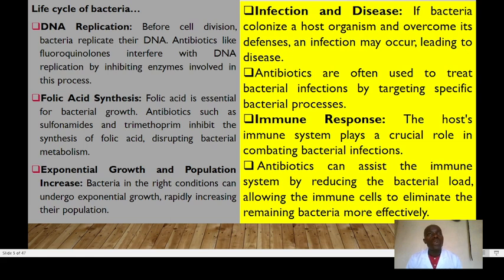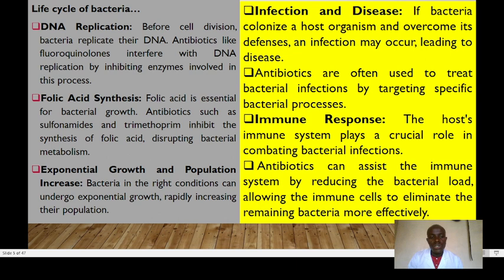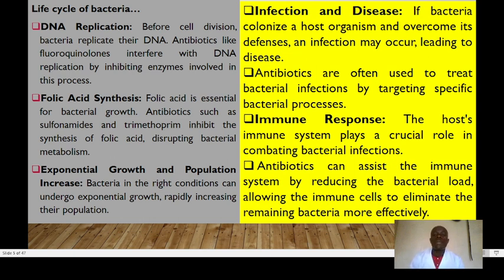Another key concept is folic acid synthesis. Folic acid is essential for bacterial growth, and antibiotics such as sulfonamides and trimethoprim inhibit its synthesis, disrupting bacterial metabolism. Under optimal conditions, bacteria can undergo exponential growth, rapidly increasing their population. If bacteria colonize a host and overcome its defenses, infection can develop — we can try to prevent this using prophylactic antibiotics or vaccination.